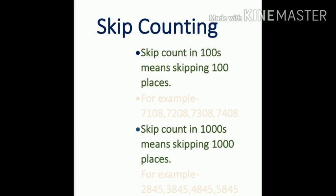Skip counting in hundreds means skipping the 100th place digit. That is, the digits at the tens and ones place remain the same. For example, starting from 7108, the digit at the 100th place is 1, so next comes 2, making the next number 7208.